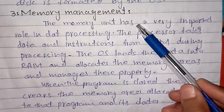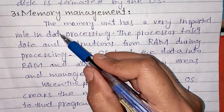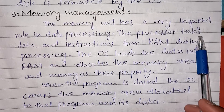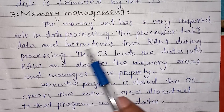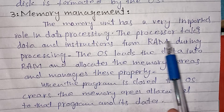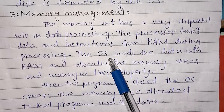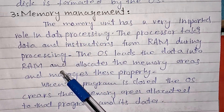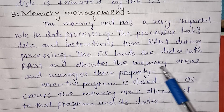The memory unit has a very important role in data processing. The operating system loads the data into RAM, allocates a memory area, and defines a specific area where we load the data.